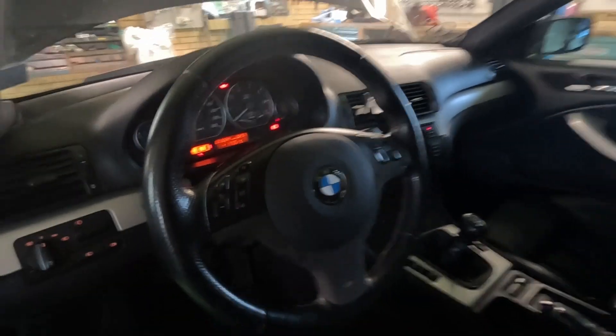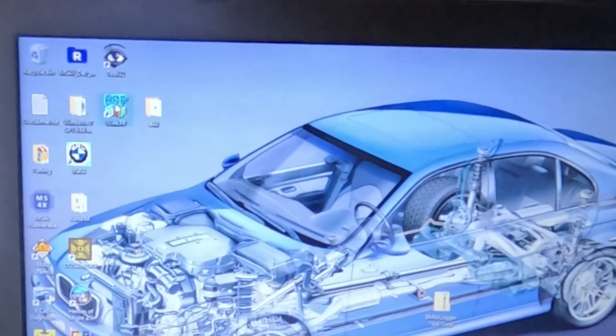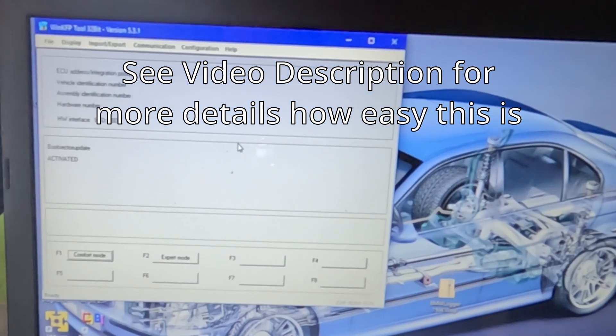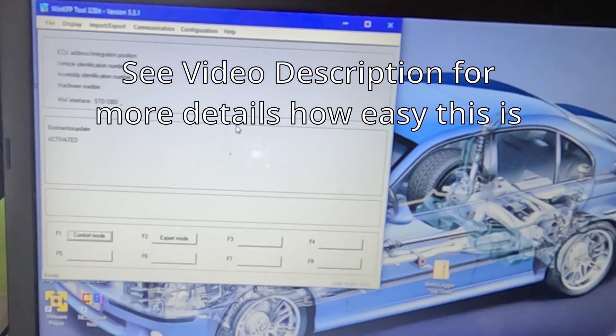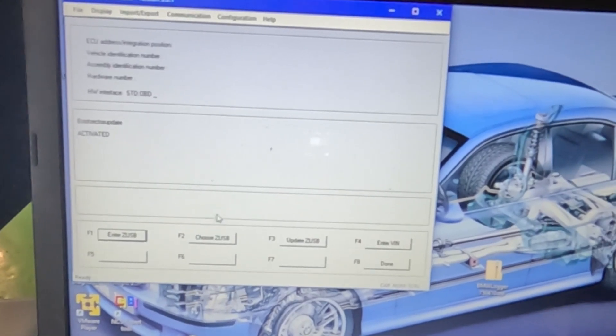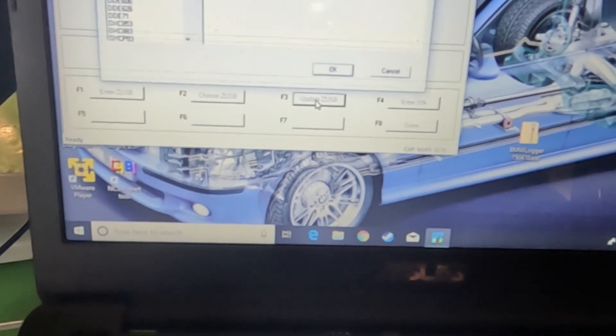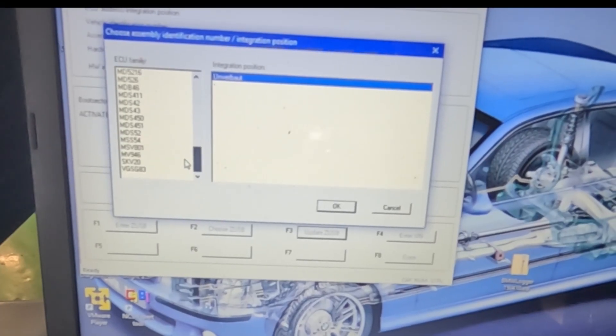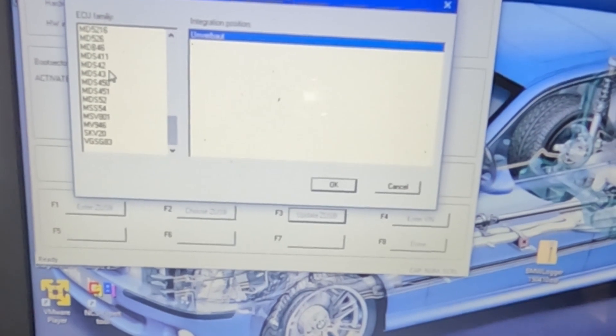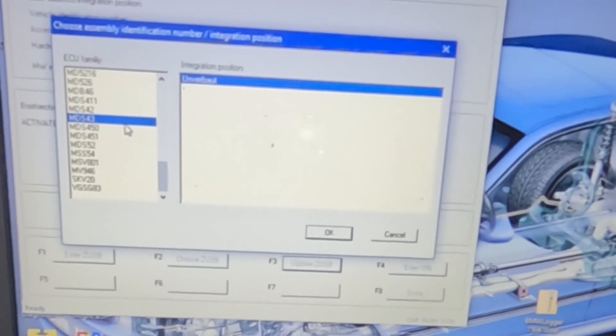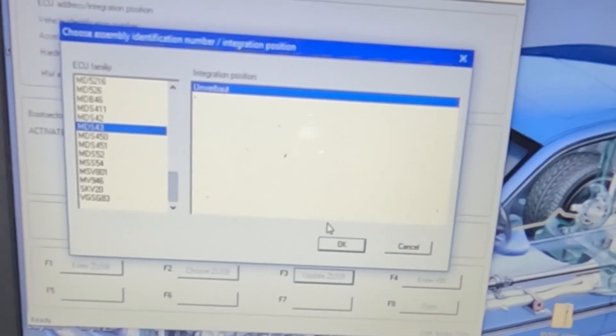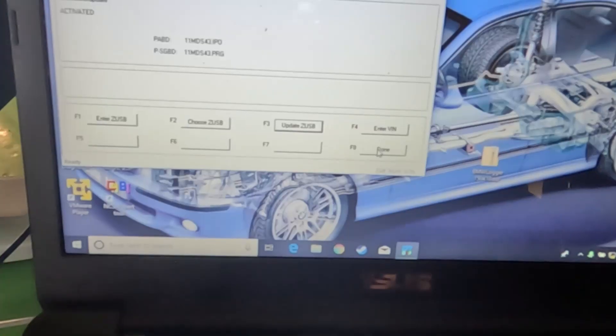Key in position 2. We'll boot up WinKFP. Press comfort mode. Press update set USB. Choose the DME family. In this case here it's called MDS 43. Click OK.